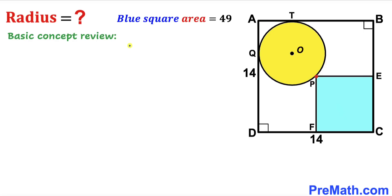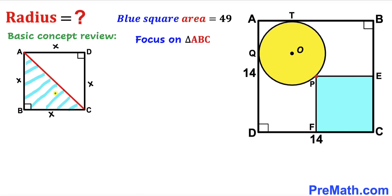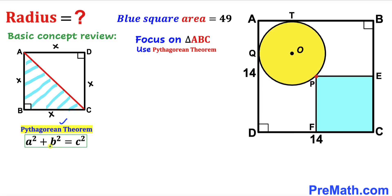Let's get started with a basic concept review. Focusing on square ABCD, since all side lengths are the same, let me label each side length x. We draw diagonal AC by connecting vertices A and C, then focus on right triangle ABC. Using the Pythagorean theorem — a² + b² = c² — we label the two legs lowercase a and b, and the hypotenuse c.